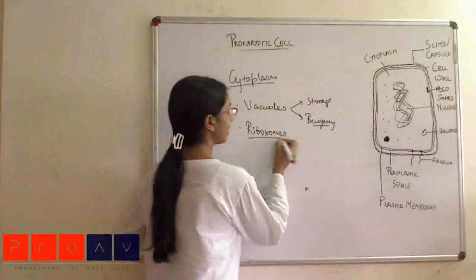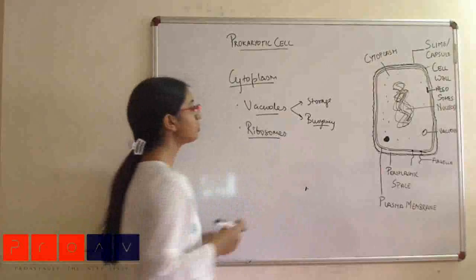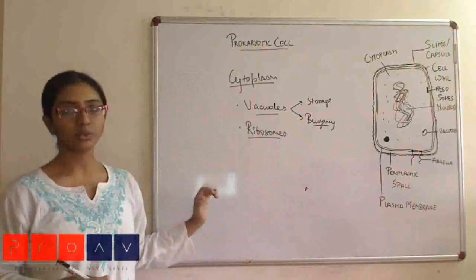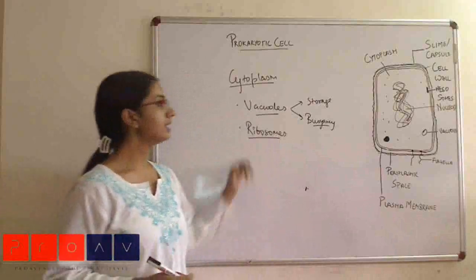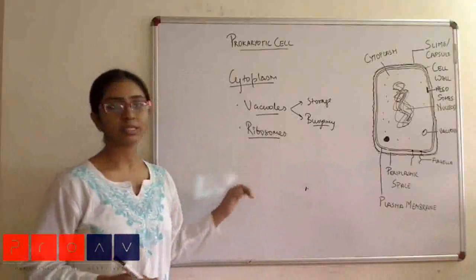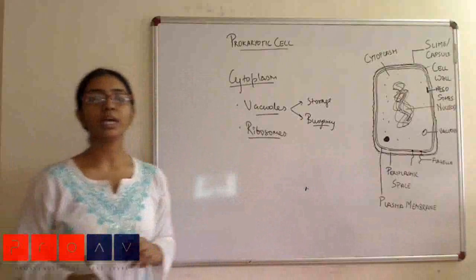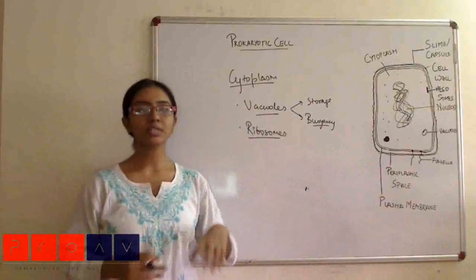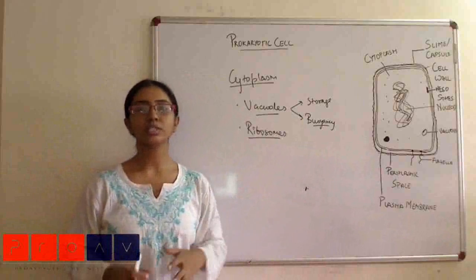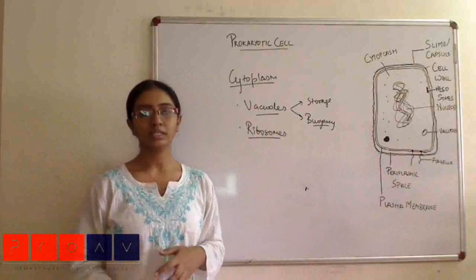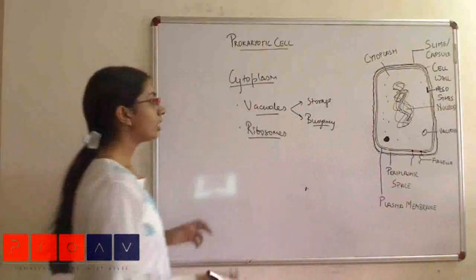So apart from that, we have ribosomes. Ribosomes are structures which are also there in eukaryotic cells. There are two basic differences. In eukaryotic cell, the ribosomes are associated with endoplasmic reticulum, whereas in prokaryotic cell, these ribosomes are present randomly inside the cytoplasm. They're not associated with any endoplasmic reticulum since it's not there in the prokaryotic cell itself.